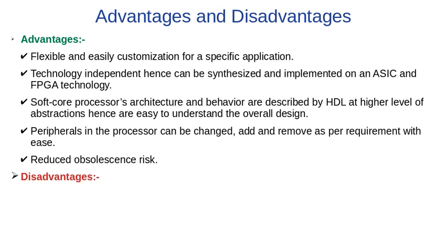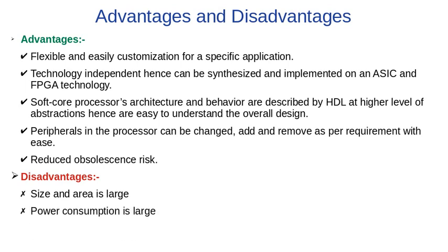There are a few disadvantages of using soft core processors in embedded systems. On an FPGA, the size and area required for the design is large, which leads to higher power consumption. Additionally, the performance is lower than that of conventional microprocessors or microcontrollers.